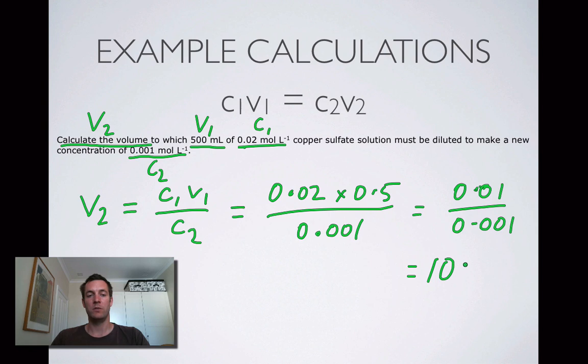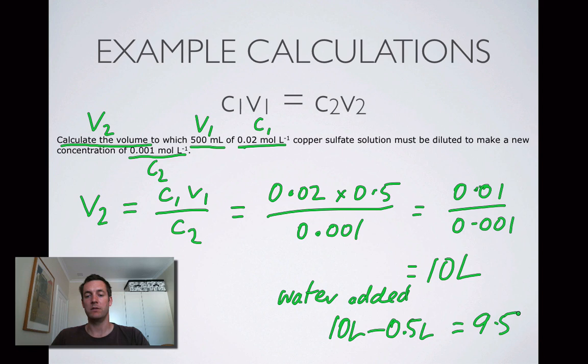So our new volume is going to have to be 10 liters. Sometimes we get asked how much water you've got to add. Well, if we were trying to find that, we need to remember that we started with 500 milliliters, so the water that we added would be 10 liters minus 0.5 liters, and that's obviously nine and a half liters.